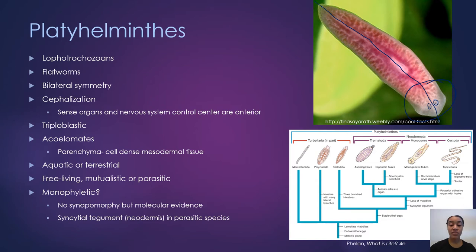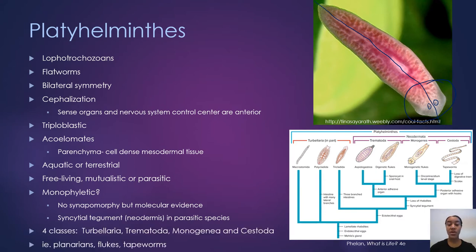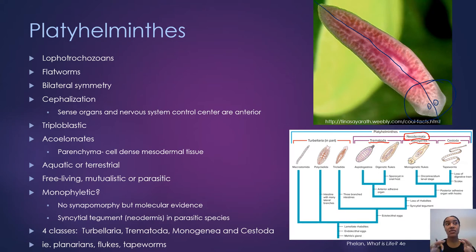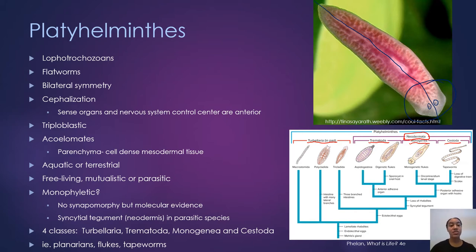One thing that has been determined is that the parasitic species of flatworms are in a monophyletic group. The parasitic species — Trematoda, Monogenea, and Cestoda — are all within a clade called Neodermata. They're all characterized by a structure called the syncytial tegument or neodermis, which we'll talk more about shortly. The other class of flatworms is Turbellaria, and this is where things get a little uncertain about monophyly. Examples include planarians, which are commonly used in experiments because they can regenerate when cut in half.